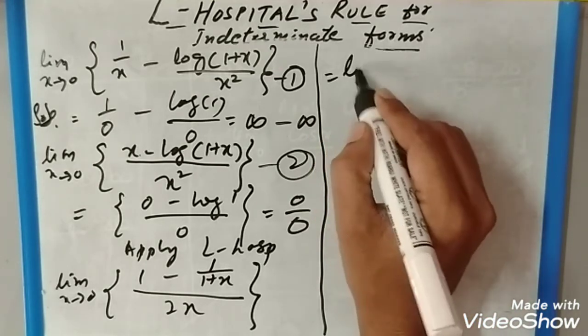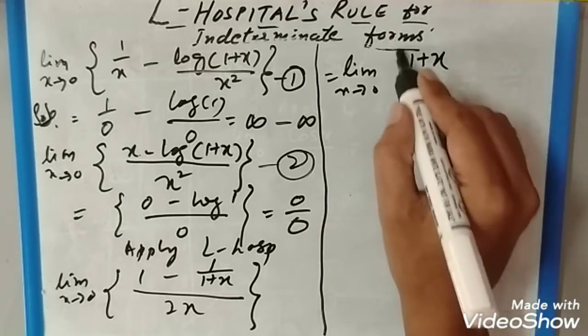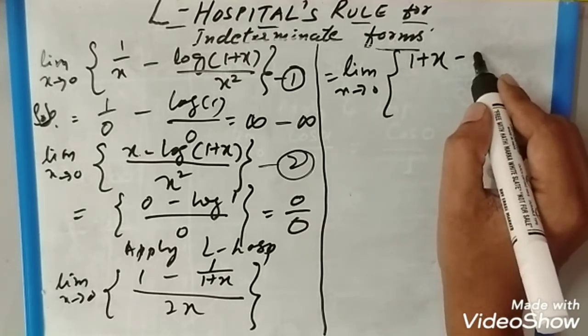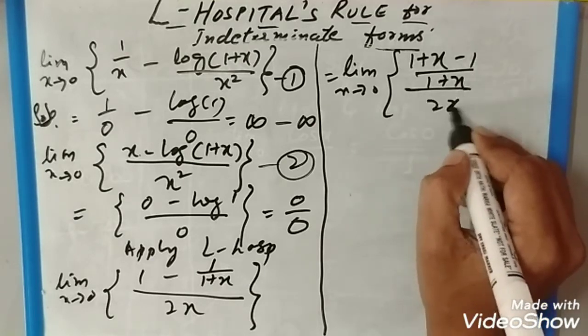You will get limit x tends to 0. Taking LCM, it will become (1+x minus 1)/(1+x) divided by 2x.